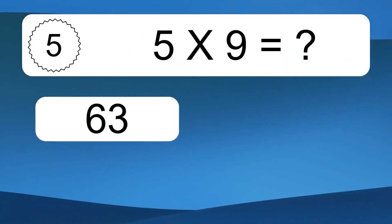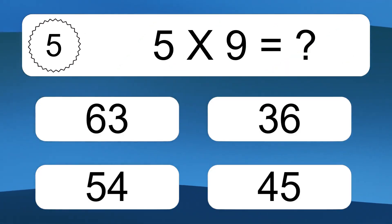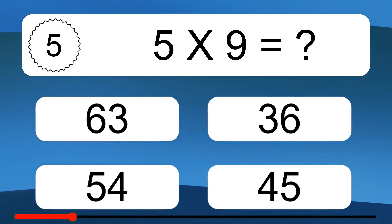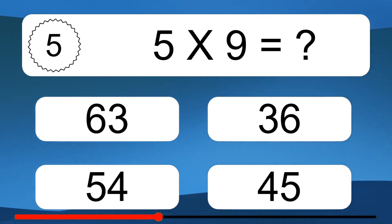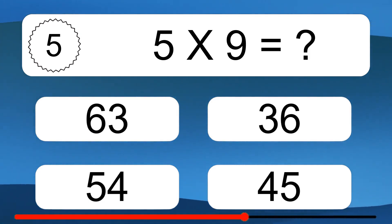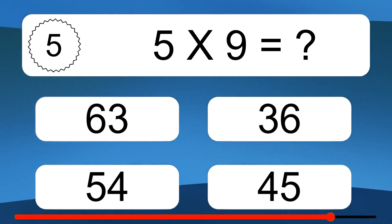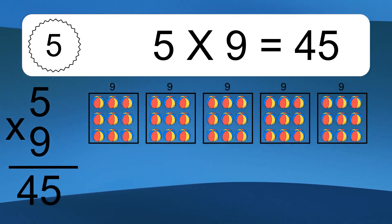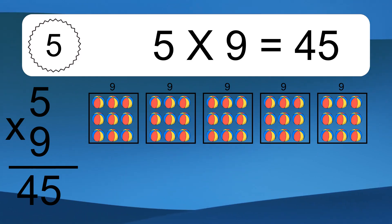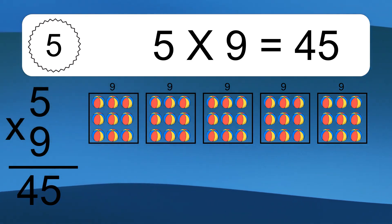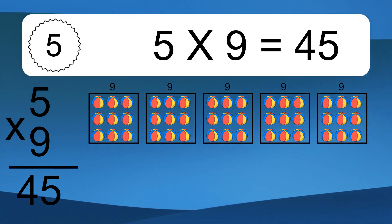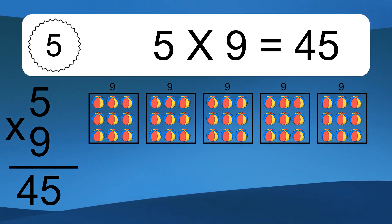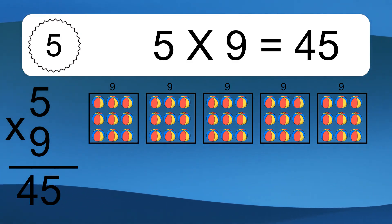5 times 9 equals what? 5 times 9 equals 45. We have 5 boxes, and each box has 9 colorful balls inside. If you count all the balls in all the boxes together, you will have 5 times 9 balls. This equals 45 balls.